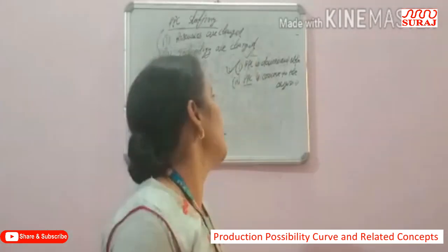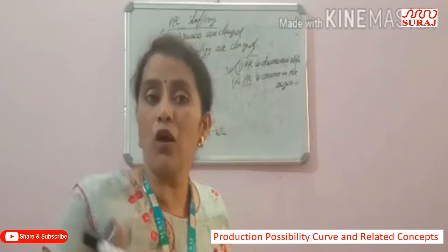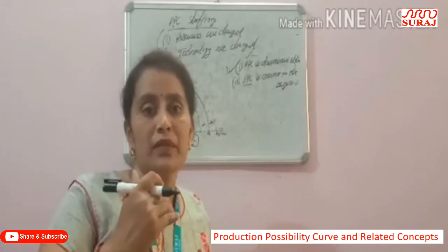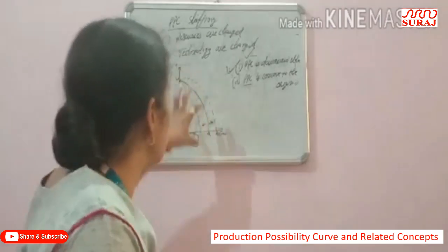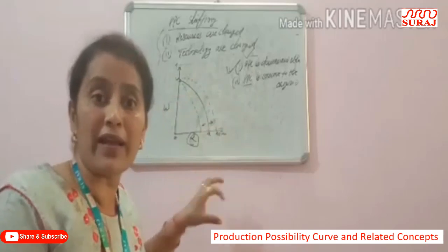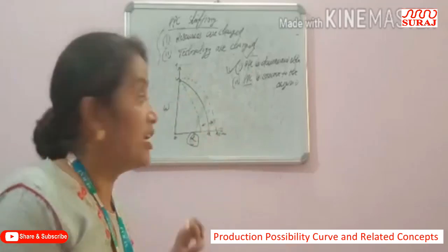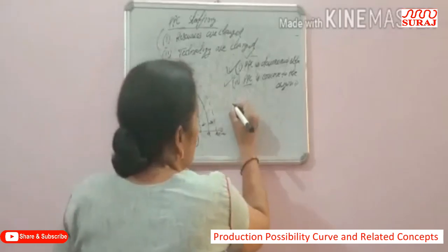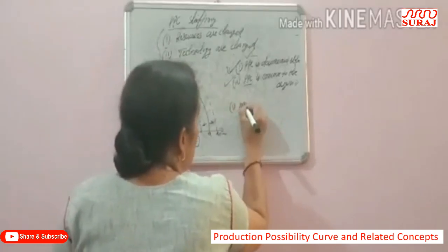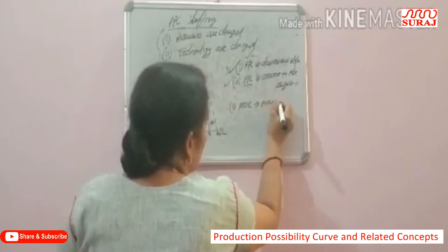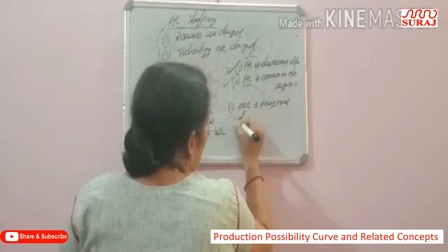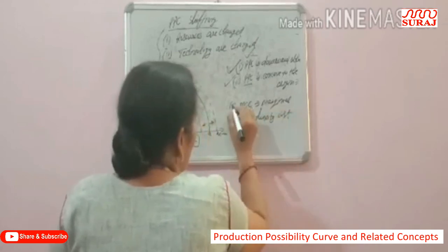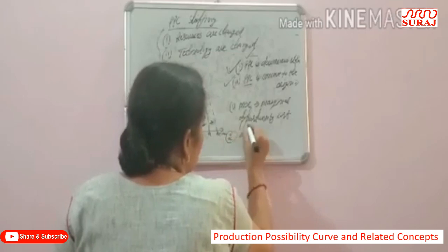The second property is that the PPC is concave to the origin. In economics, every diagram and table we draw is based on some concept, and there is a reason behind the shape. Why is the shape of the PPC concave? Why is it not convex? Before reading this, we need to understand two concepts: Marginal Opportunity Cost and Opportunity Cost.